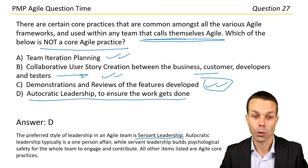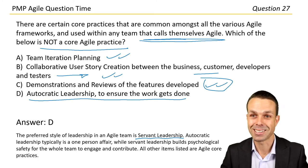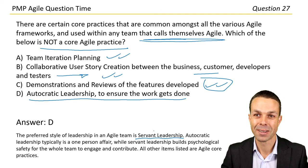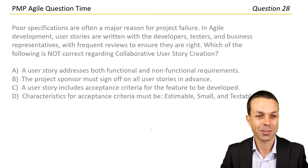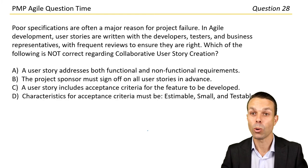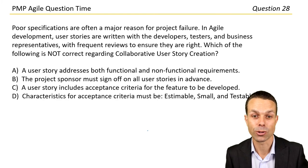Answer D is not a core agile practice. The preferred style of leadership in an agile team is servant leadership. Autocratic leadership is a one-person affair, while servant leadership builds psychological safety — it's about serving and growing the team and enabling everyone to engage and contribute. All other items listed are core agile practices.